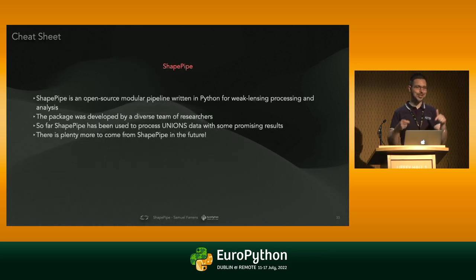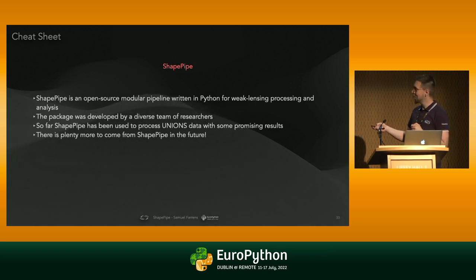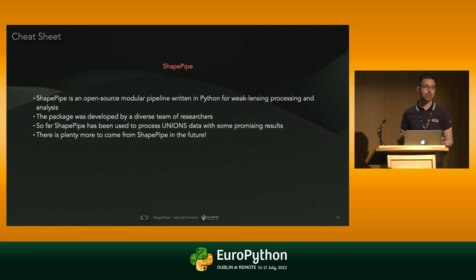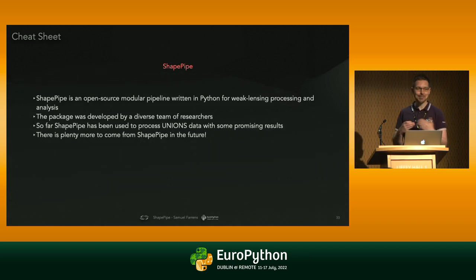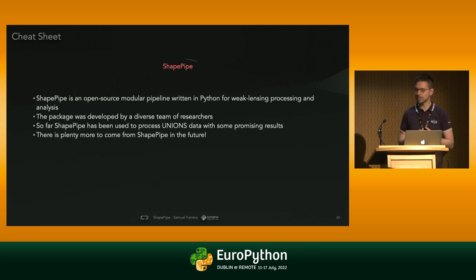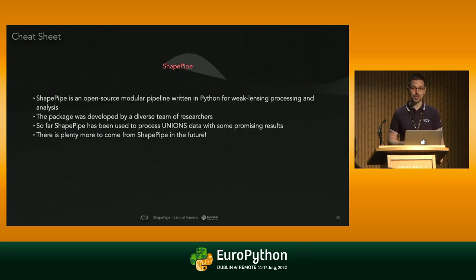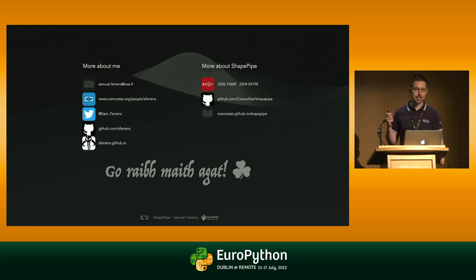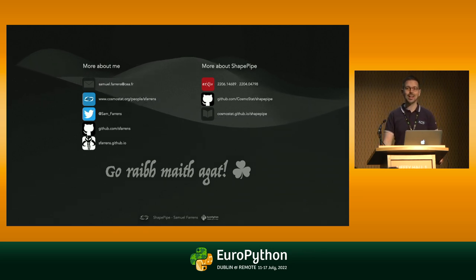What's coming in the future is we're working on 3,500 square degrees of UNIONS data — pretty much the whole survey — which is actually going to be one of the largest weak-lensing catalogues produced to date. This will be published, and if you think it's interesting, do stay tuned. My cheat sheet for this section: now you know what all of the words in the title mean. If you've learned nothing else from this presentation, I'll be completely happy with that. It's an open source project with a diverse team of people very happy for outside contributions. We've run this on real data, got some nice results, and there's plenty more coming from ShapePipe in the future.